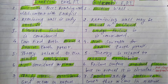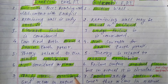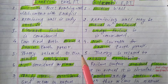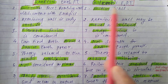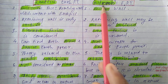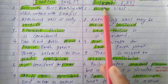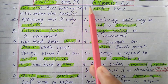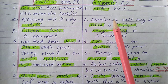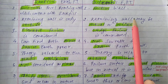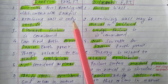Please do subscribe the channel, like the video, and press the bell icon so you will get regular updates. Today in this video we are going to differentiate between Rankine's earth pressure and Coulomb's earth pressure theory. Both Rankine's and Coulomb's theories are applicable for determining earth pressure, either in the active case or in the passive case.